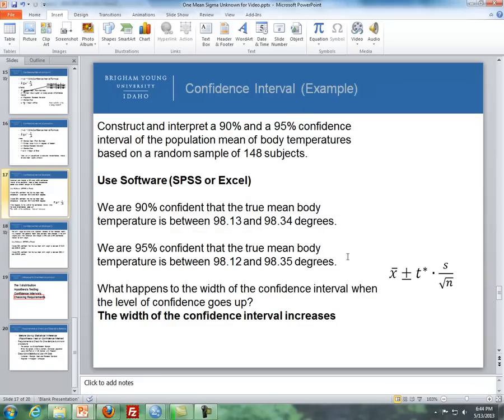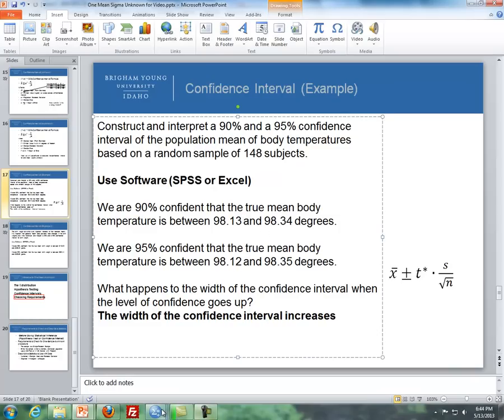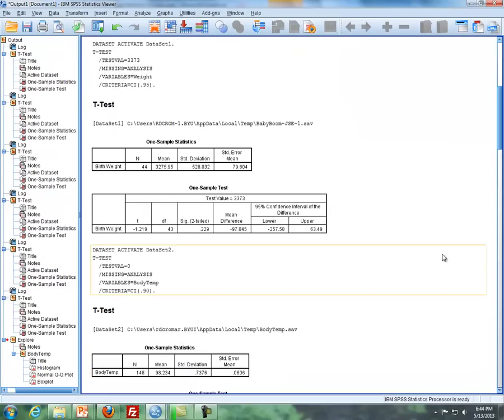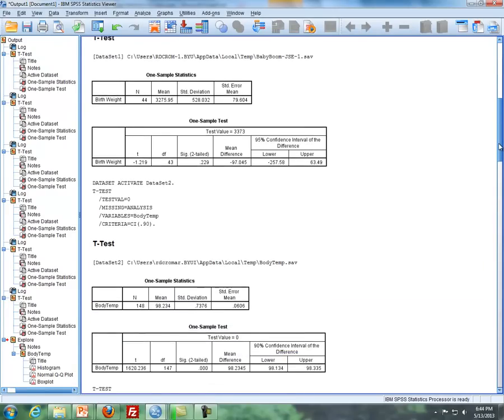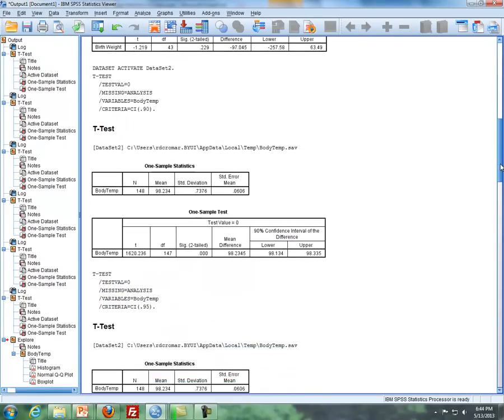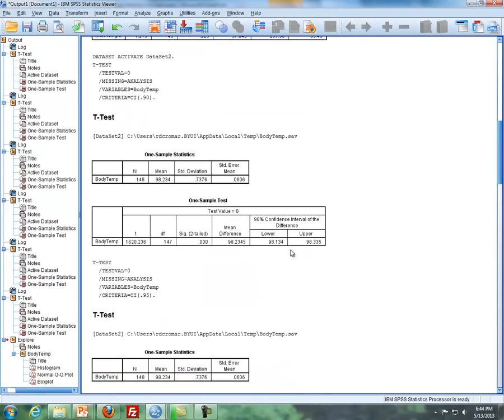So now here what we'd like to do is construct using the body temperature data, construct and interpret a 90% confidence interval for the population mean body temperature based on a random sample of 148 subjects. So here's an example. So what I'll do is let me pull up the output that I have for this. We're doing a 90 and a 95% confidence interval. We get this over here to the right here, and it's a similar table that you would see in Excel. So this is a 90% confidence interval.